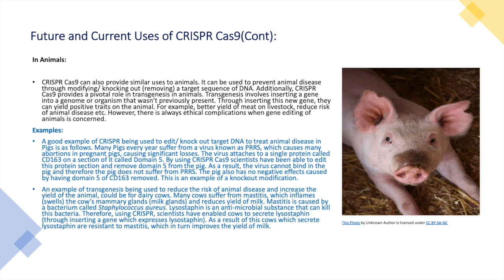There are also current uses of CRISPR-Cas9 in animals. Similar to how it is used in humans, CRISPR-Cas9 can be used to prevent animal disease through modifying, knocking out, or removing a target sequence of DNA that would cause disease.